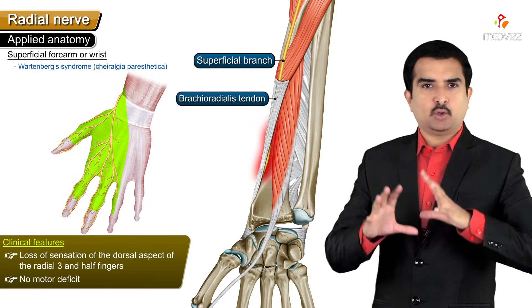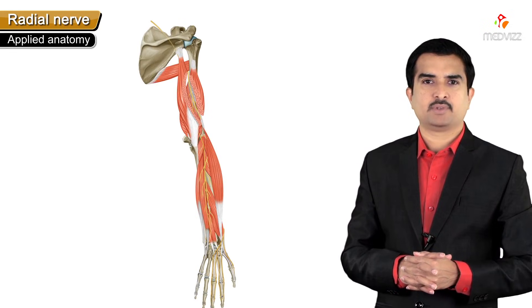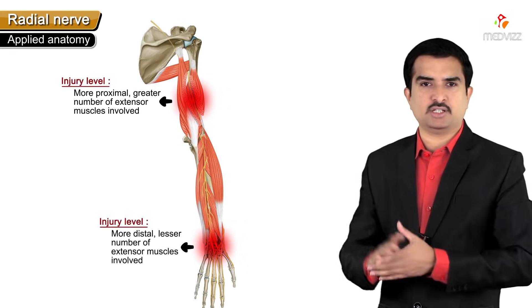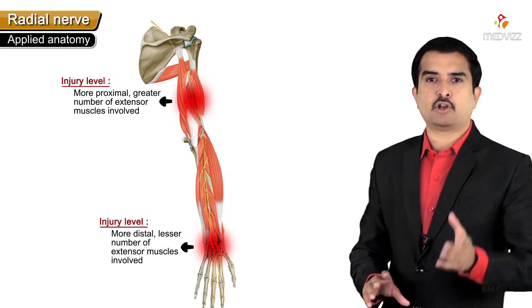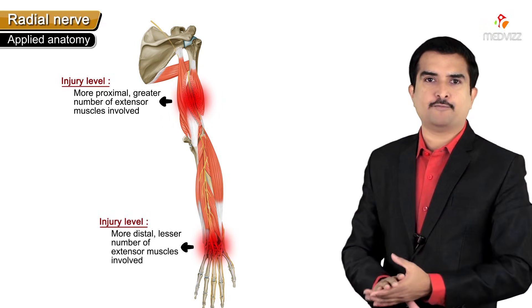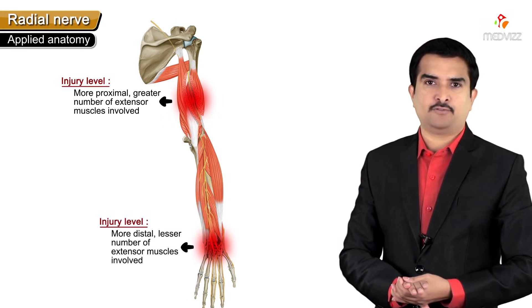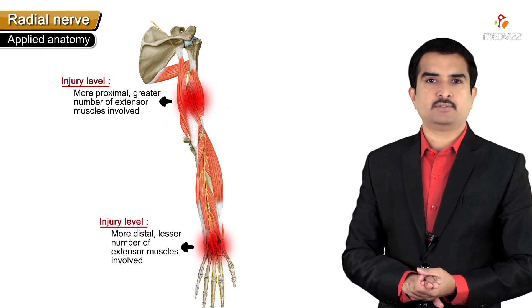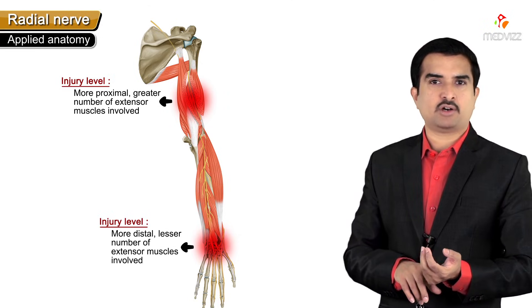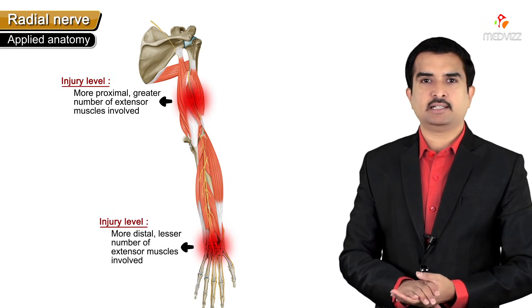An important overall point: the higher and more proximal the lesion, the greater the number of extensor muscles involved and the greater the degree of wrist drop. This concludes the discussion of the radial nerve - its origin, course, branches including motor and sensory supply, and clinical anatomy.